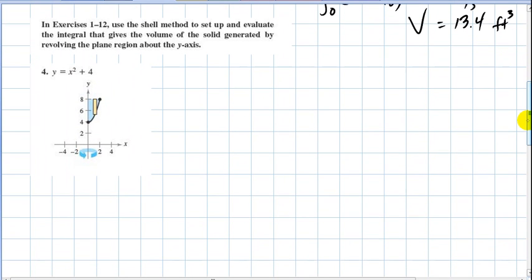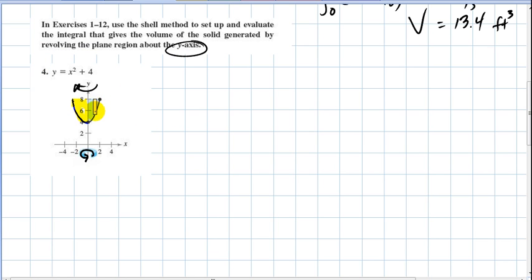Our next problem, number two, we're given y equals x squared plus four, and we want to set up and evaluate an integral giving the volume of the solid generated by revolving the plane region around the y-axis. We're going to use the shell method. I'm going to reflect the region over to the left, and the vertical cross-section shown represents the cross-section for the shell method.